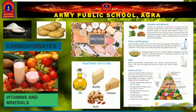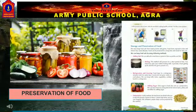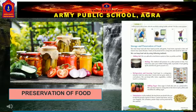So children, we should take all these nutrients in appropriate amount, which is called a balanced diet. Children, we can keep our food safe from insects, worms and germs by using different methods of preservation. We can preserve food by boiling, freezing, dehydrating, pickling, etc.